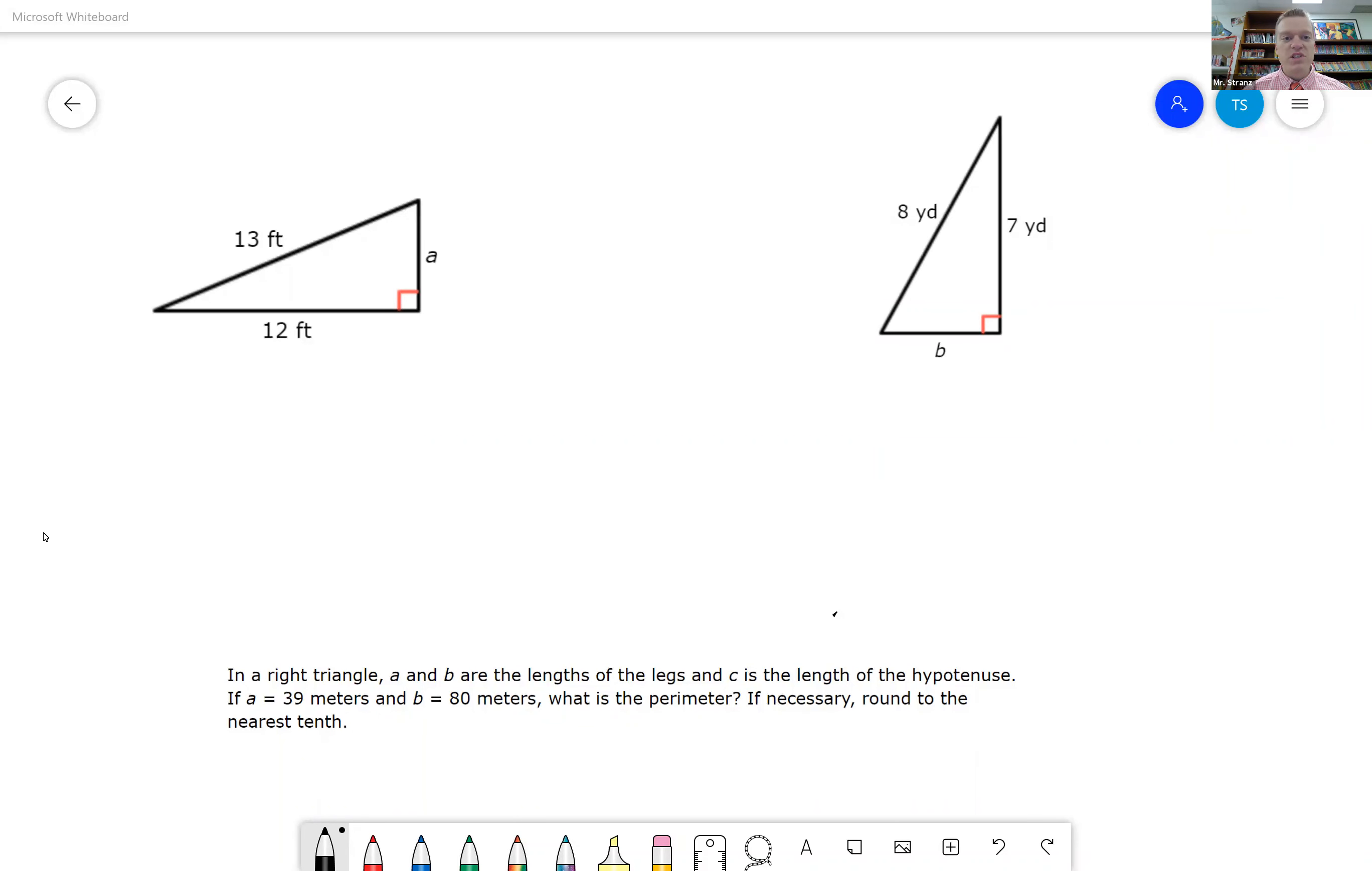Hello, and welcome back to Math with Mr. Strands. We're going to be going over the Pythagorean Theorem today. A squared plus B squared equals C squared.